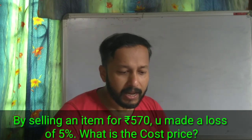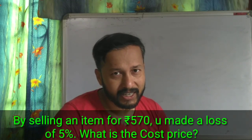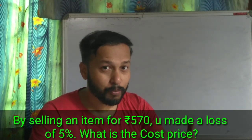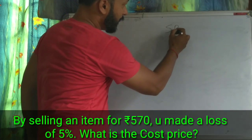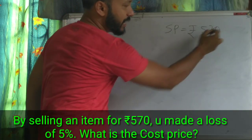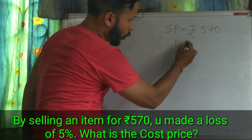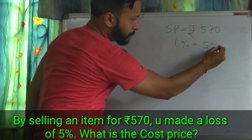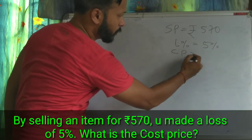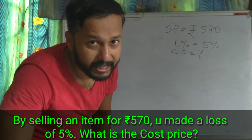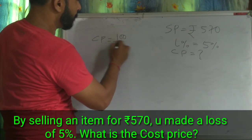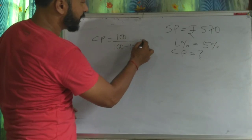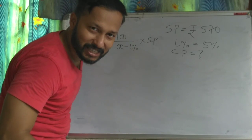Question number one: an item was sold for rupees 570, meaning selling price is rupees 570. At a loss of 5%, so loss percent equals 5%. What is the cost price? We know the formula: CP equals 100 by 100 minus loss percent into SP.